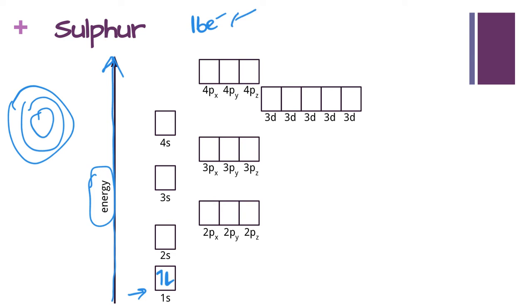Now we want to keep going, and we need 16 arrows basically on this diagram in order for it to be finished because we have 16 electrons and each arrow is an electron. The next level we fill is 2s, so I'm going to put two in here and that makes four electrons total.